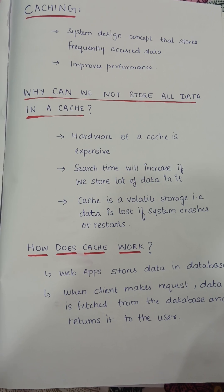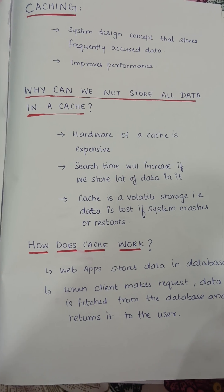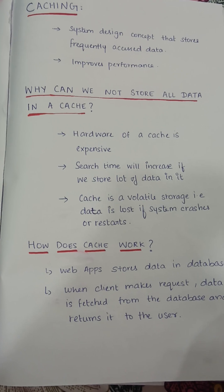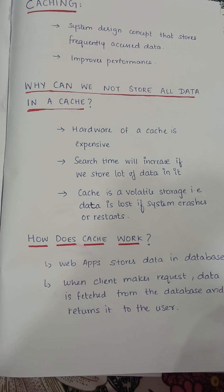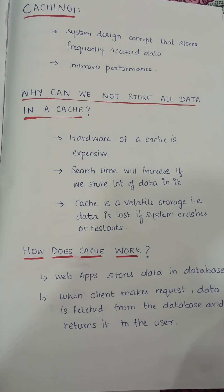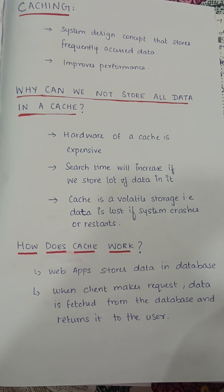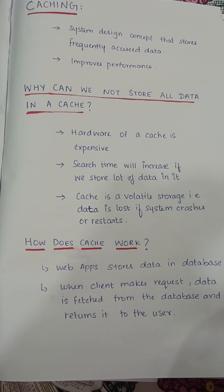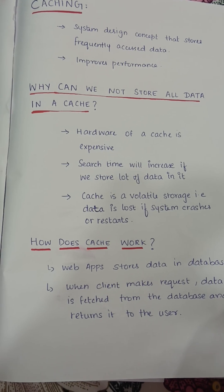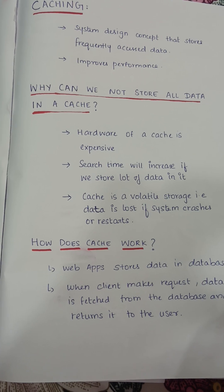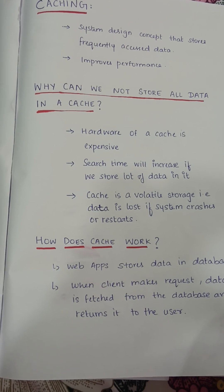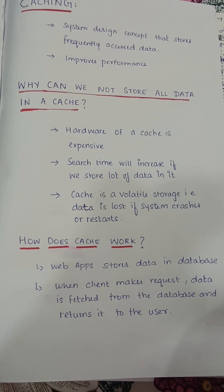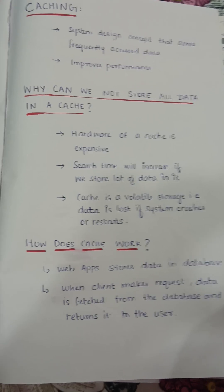Cache is a volatile storage, meaning data is lost if the system crashes or restarts. How does a cache work? In general, web apps make use of a database to store or retrieve information. So if a client makes a request, data is fetched from the database and returned to the user.